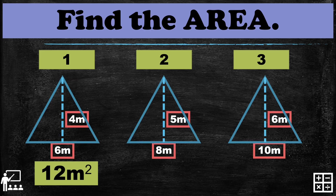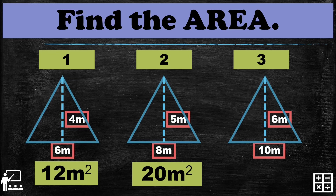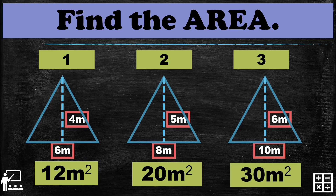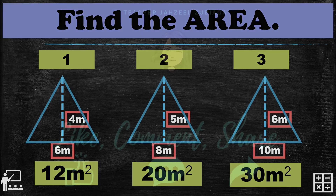For the second triangle, my answer is 20 meters squared. I multiplied 8 times 5, which gives 40, and divided it by 2 to get 20 meters squared. For the last triangle, the answer is 30 meters squared. I multiplied 10 times 6, which is 60, and divided it by 2 to get 30 meters squared. Thank you for listening, and see you on my next topic.